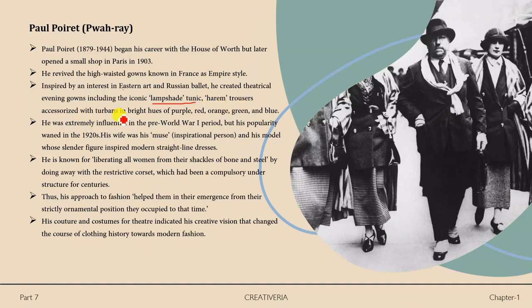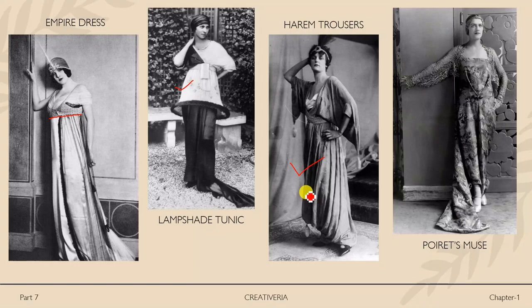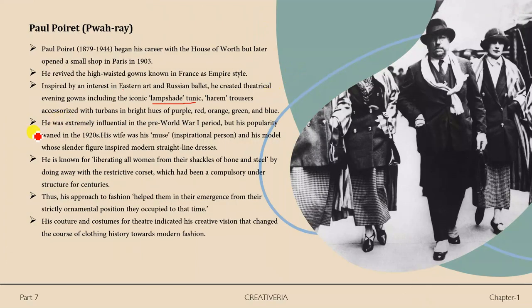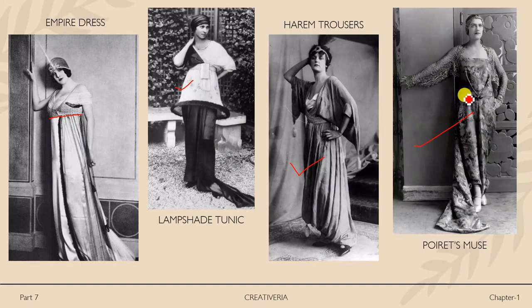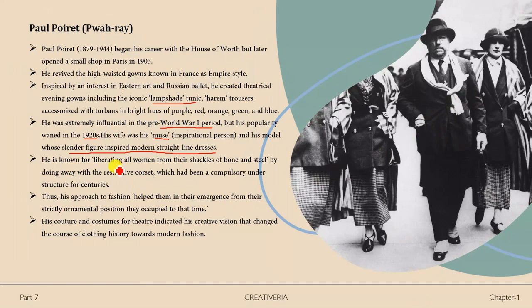Poiret also designed harem trousers accessorized with turbans in bright hues of purple, red, orange, green, and blue. He was extremely influential in the pre-World War I period. His wife was his muse and model, whose slender figure inspired modern straight-line dresses. He is known for liberating women from the restrictive corset — at that time, wearing a corset was compulsory for women, causing difficulty in breathing and movement.